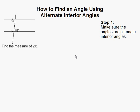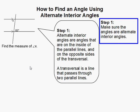How to find an angle using alternate interior angles. The first thing you have to do is make sure that the angles are in fact alternate interior angles.